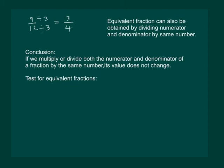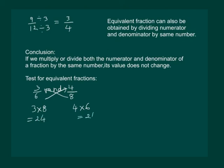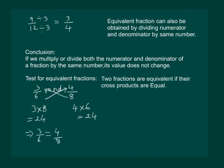Now, to check whether given fractions are equivalent or not, say we have to test whether 3 by 6 and 4 by 8 are equivalent fractions. What we need to do is just cross multiply the two fractions. We get 3 into 8 and 4 into 6. 3 times 8 is 24, and 4 times 6 is also 24. If the products are equal, then we can say that the given fractions are equivalent. Two fractions are equivalent if their cross products are equal.